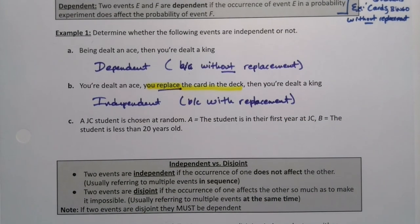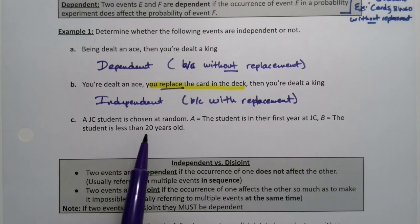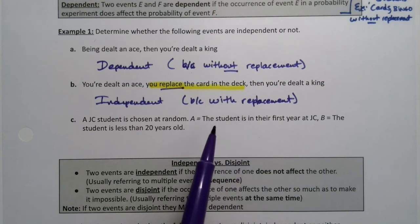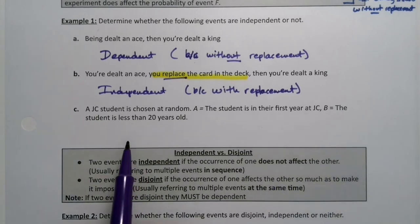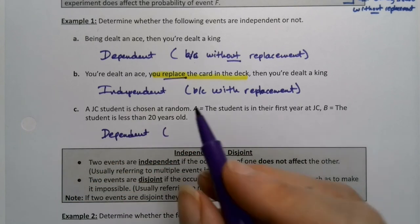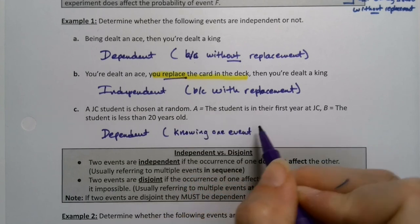Suppose I choose a student at random. Event A is the student is in their first year at JC, and event B is the student is less than 20 years old. If I know one event has happened, does that affect the probability of the next? The answer is yes. Think of it in reverse: if I know the student is less than 20 — so 18 or 19 — then they're more likely to be in their first year than their fourth year. So this is actually dependent. Knowing one of these events has occurred affects the chances of the other event.